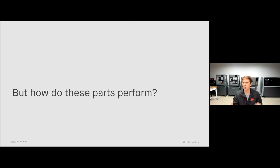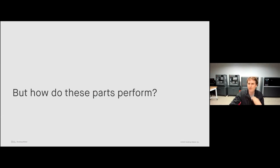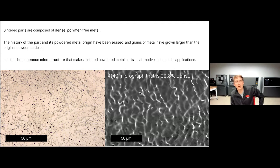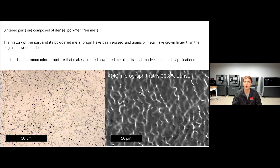A lot of you are probably thinking: how do these parts actually perform? How do they compare to a cast component? Let me explain our properties and how they actually exceed those of a cast component. One great advantage of sintering is that it creates dense, polymer-free metal parts. Since we're raising the parts to temperature uniformly, the parts have no history of their original powder metal origin. The grains have grown larger than those original powder particles, leading to a homogeneous microstructure. This makes sintered powder metal parts very attractive for industrial applications because they're isotropic — there's no memory of the original binder material, making it really exciting because you're going to get the material properties that you expect.